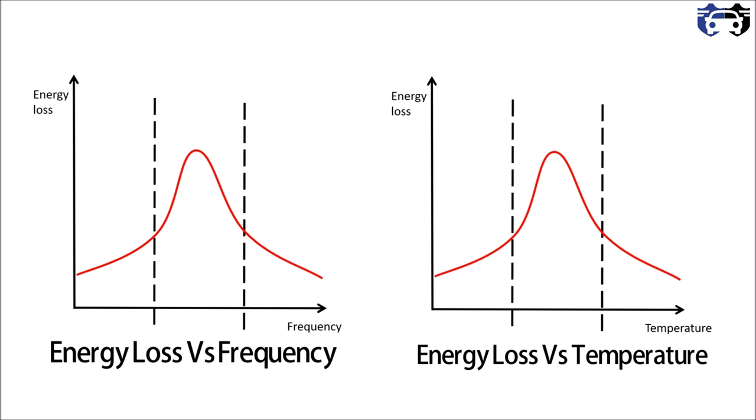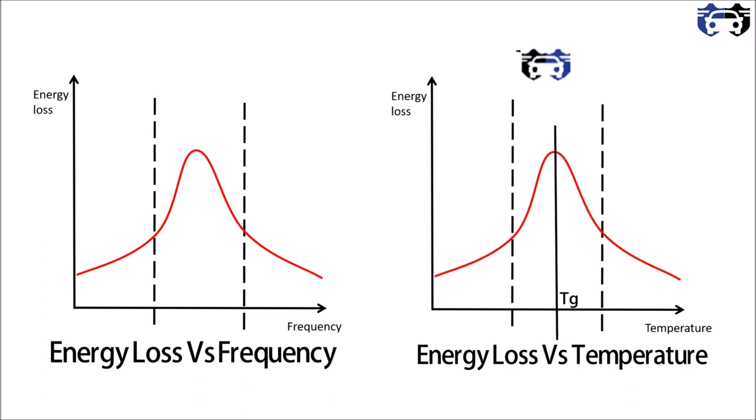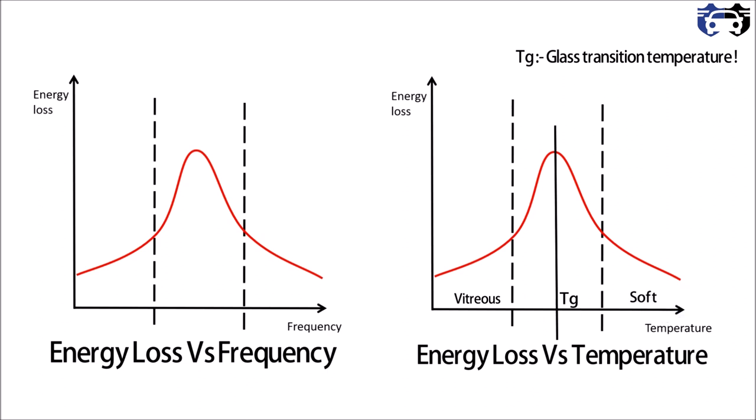Now let's see the curve of energy loss versus temperature. This curve is similar to the previous one — in both cases, whether temperature or frequency, the tire behaves as a viscoelastic material in the moderate region, so we again have a peak in the moderate temperature region. The peak in this energy loss versus temperature curve corresponds to Tg, the glass transition temperature. Below Tg the tire material behaves as a glassy material, which is brittle, and beyond Tg it behaves as a soft, cushioning-type material.